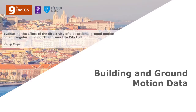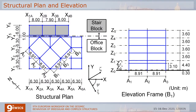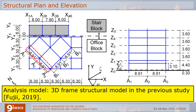Next, let us move to the building and ground motion data. These figures show the structure plan and elevation of this building. As you see, the structure plan of this building is irregular. This building consists of two blocks: the office block and the stair block. All structural walls are in the stair block. This is the elevation of frame B1. This building is a five-story building. The present nonlinear analysis uses one of the three-dimensional frame structure models constructed in the previous study.